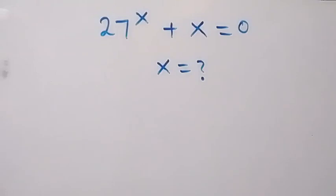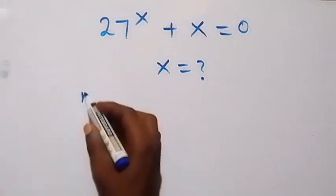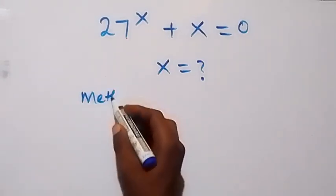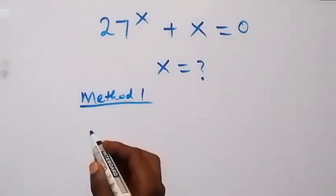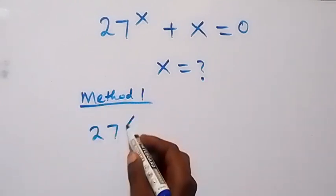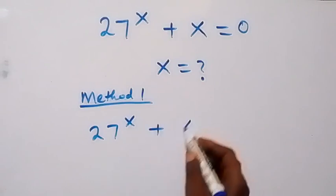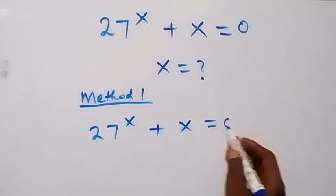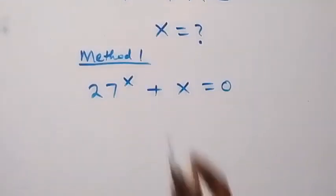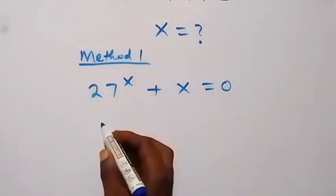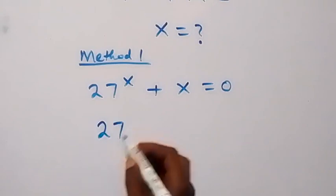Hello, you are welcome. How to solve for x in this nice exponential equation. We have two methods to use. From what we are given, that is 27 raised to power x plus x equals to zero. From here, let's take x to this side, and this becomes 27 raised to power x.